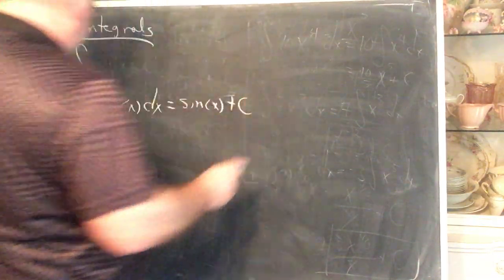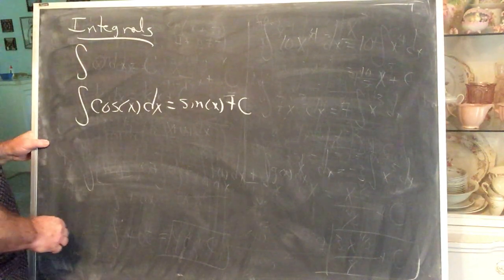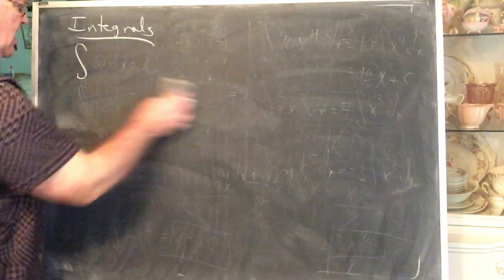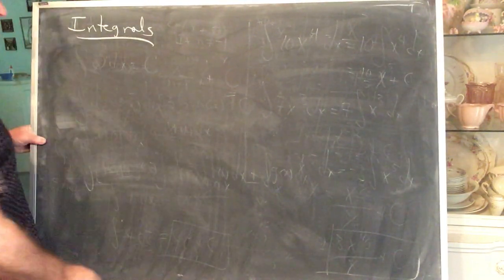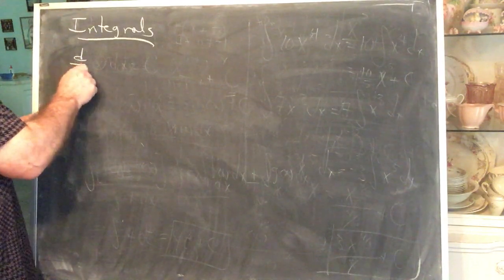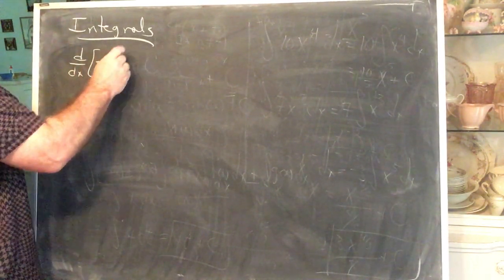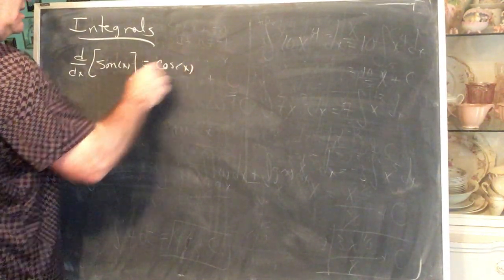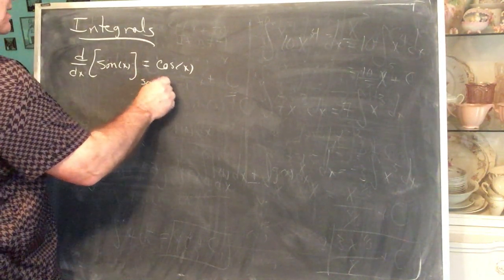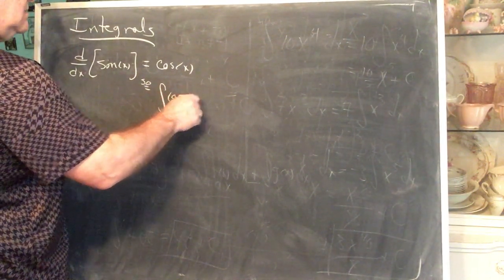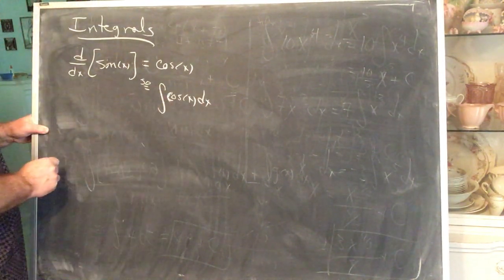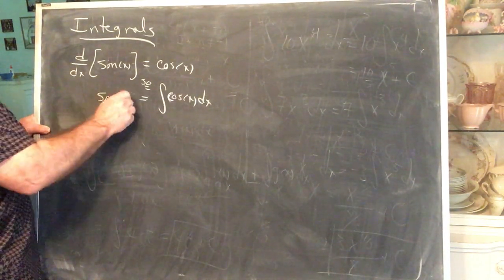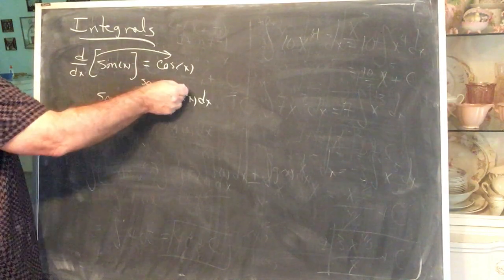Let me explain where this rule comes from with a little more detail. Let me back off a bit. The derivative of sine is cosine, so the integral of cosine is sine — except we need the constant. So the derivative of sine is cosine, meaning the integral of cosine is sine plus C. Let's make a list of our properties.